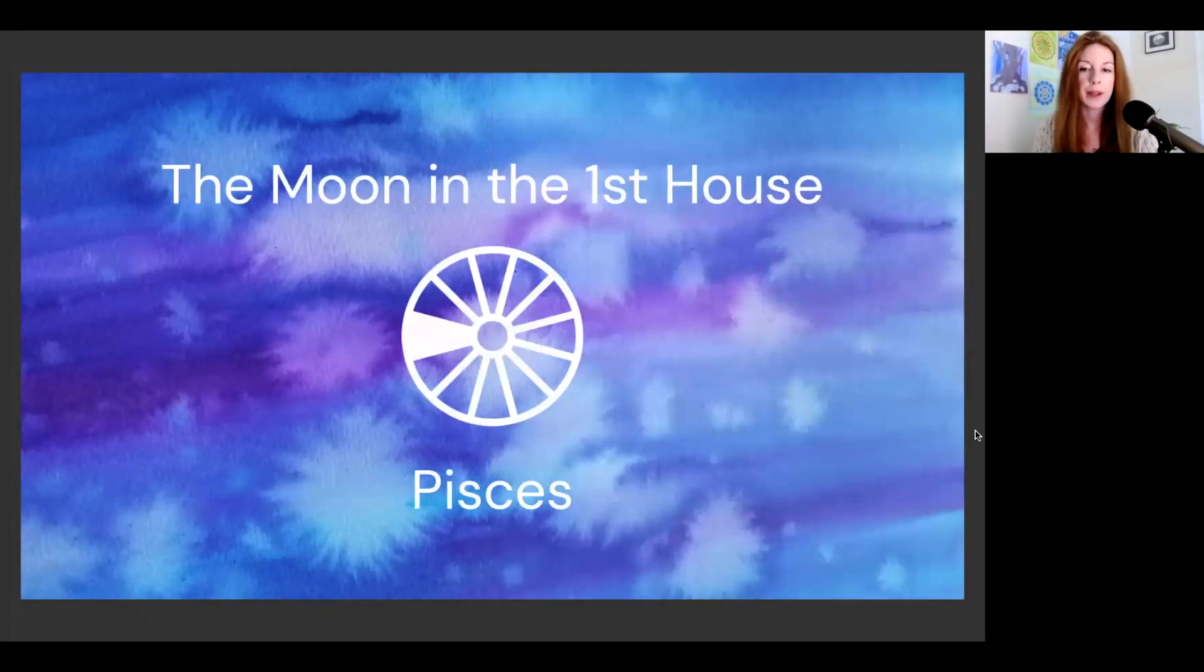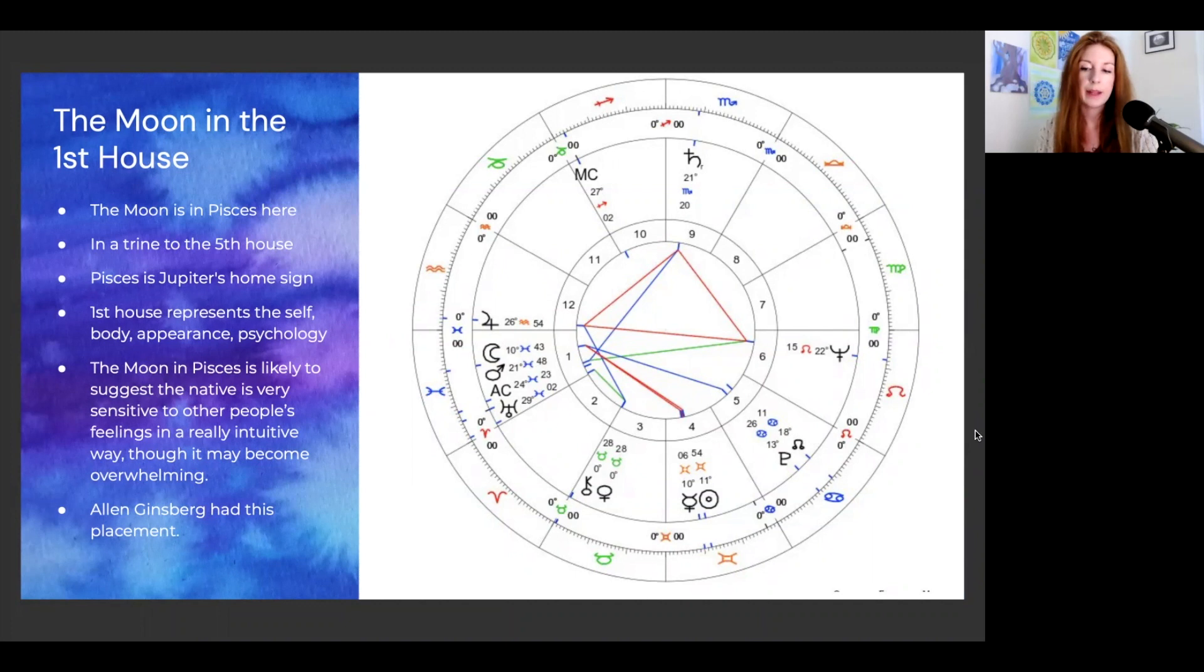If the moon is in your first house, this will be the moon in Pisces. It will be in a trine to the fifth house, and this is a positive thing. This is meaning that the moon can see her own domicile and will be supportive of things related to creativity and other fifth house topics. The moon is in Pisces, which is Jupiter's home sign or temple, and the first house represents the self, the body, your appearance, your psychology. It's a very personal house.